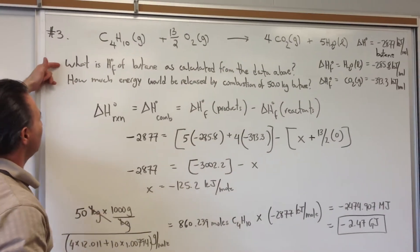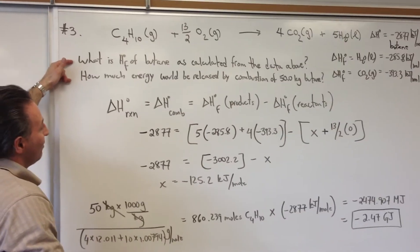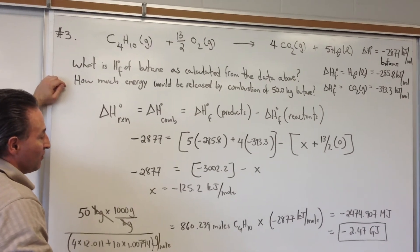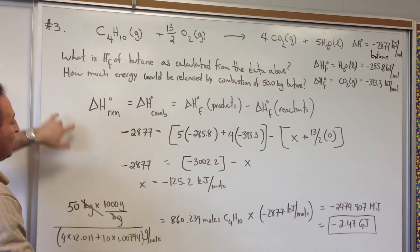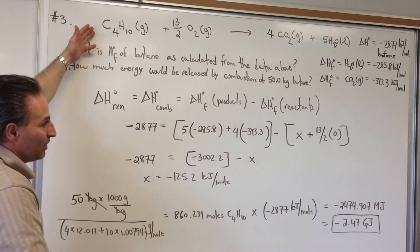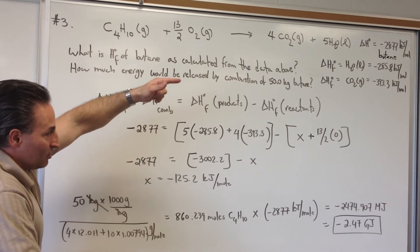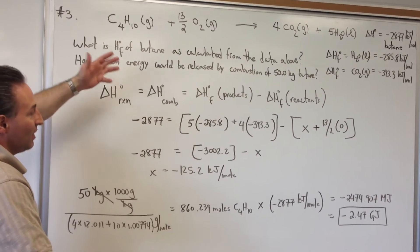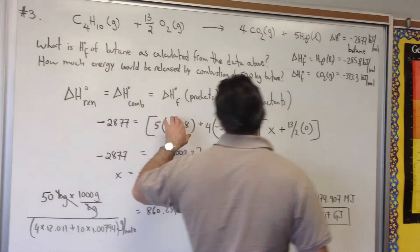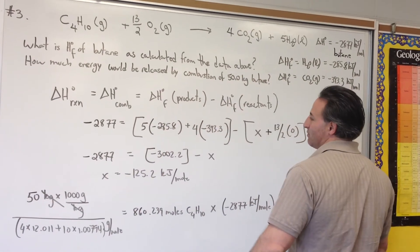So the question is, what is the delta H of formation of butane as calculated from the data above? In this case, the delta H of reaction is the same as the delta H of combustion. This is a combustion reaction. So the delta H for this reaction, which is 2877, is for the heat of combustion. And as we recall, it can be calculated using the heat of formation of the products minus the heat of formation of the reactants.